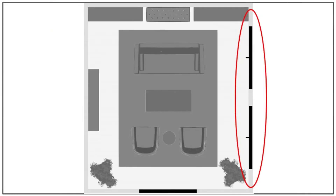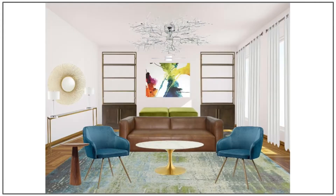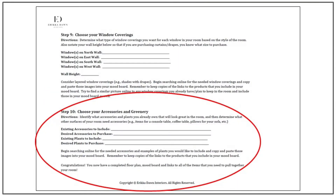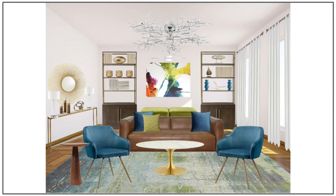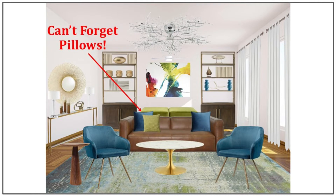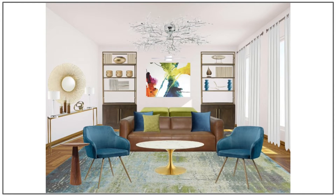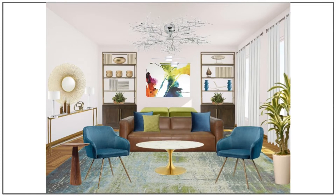On to step 9, window coverings. I only need to worry about window treatments for the east wall. Because my primary style is mid-century modern, I could leave these large windows bare, but I always like a way to control natural light and privacy, so I'll be using simple white drapery panels. Finally, step 10: choose your accessories and greenery. I'll add a trio of mid-mod candle holders and a small contemporary sculpture to the console table, books and stylish accessories to the bookcases, and leave the coffee table bare. I'll also add two tall indoor plants to the corners of the room, plus some matching succulent arrangements to the bookcases.